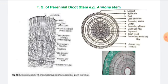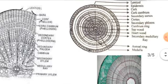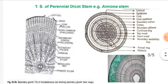Now, secondary growth in the perennial stem — the example is Annona. In the case of Annona, secondary growth takes place in the vascular region as well as the non-vascular region. In the vascular region, three types of tissue form: one is the secondary xylem, another is the secondary phloem, and the third is the medullary rays.